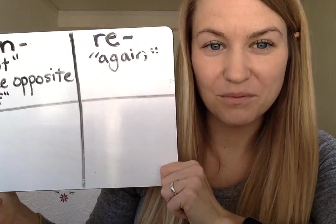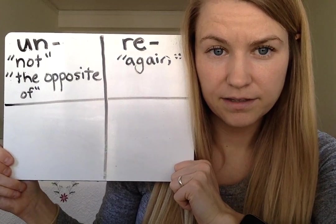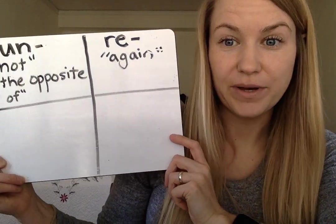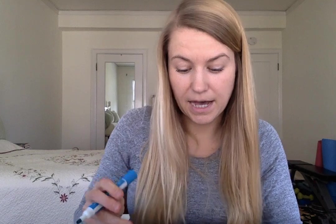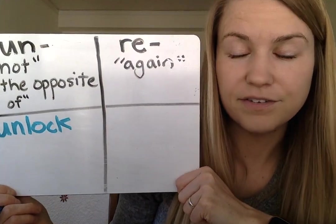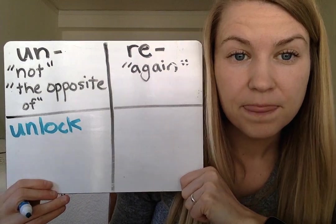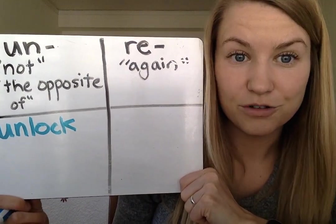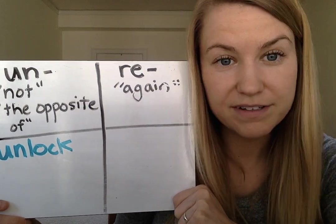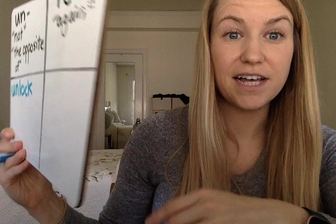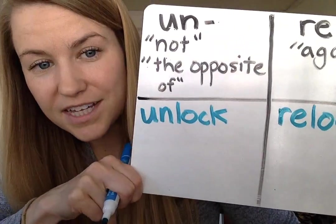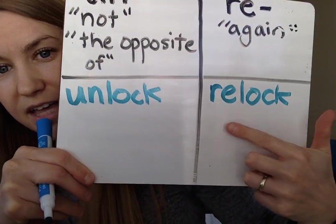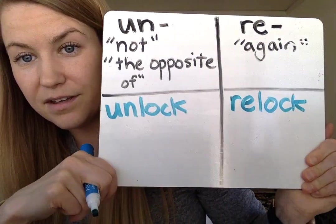So to unlock something means to do the opposite of locking it, right? If you unlock a door, you are not locking it — you're doing the opposite of that. Excellent. What if I said 'relock'? Relock is going to go over here because the prefix is different, so it changes the word a little bit. We still have the base word 'lock,' but in this case you are locking again — to lock again versus to do the opposite of lock.